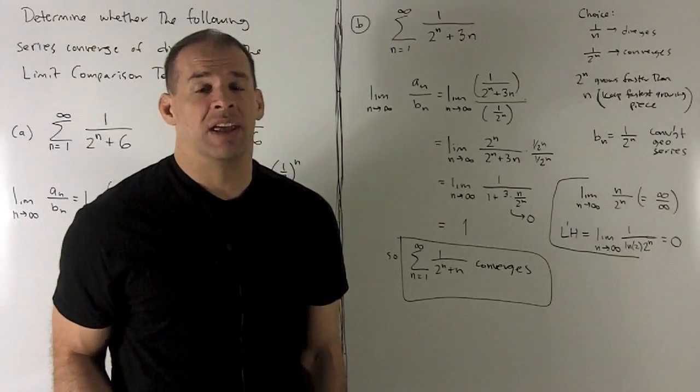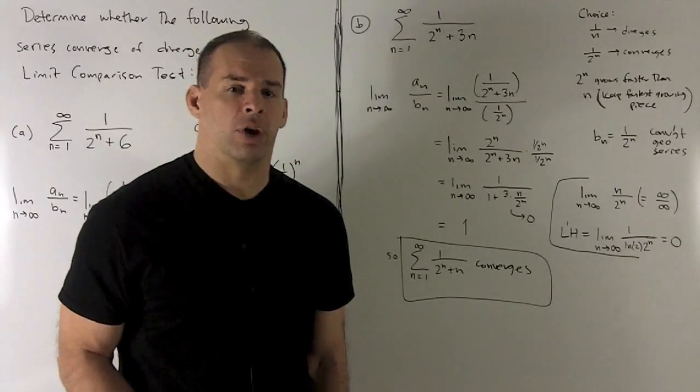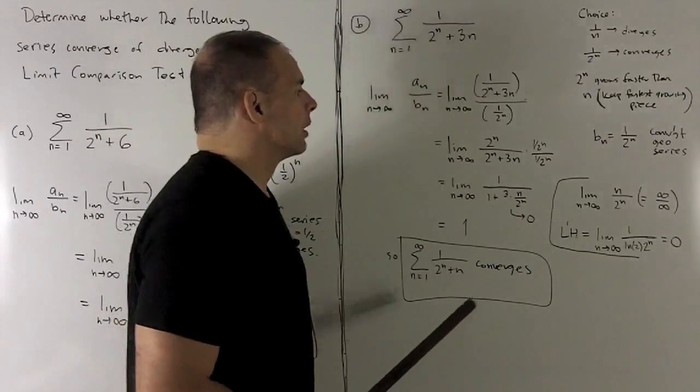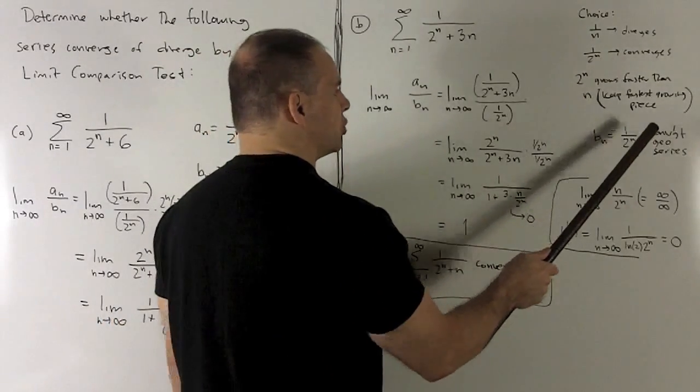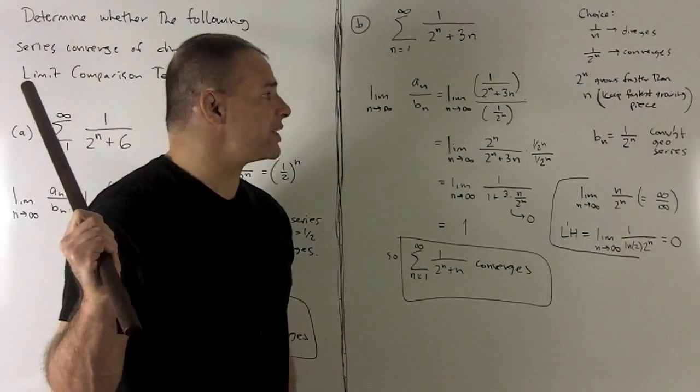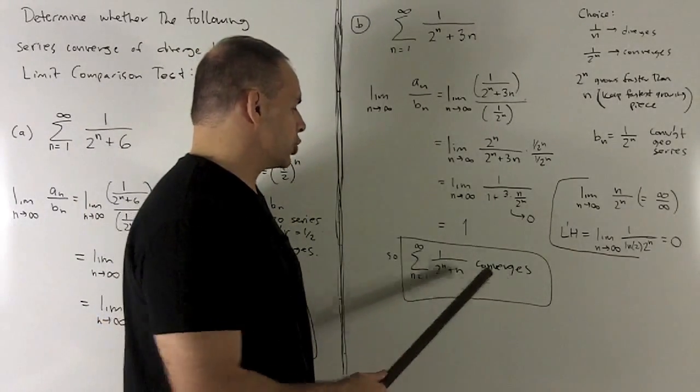Limit convergence test says series for a_n, series for b_n are going to both converge or both diverge together. In this case, our b sub n is a convergent geometric series, same one we used in our first exercise, so that means our original series is going to be convergent.